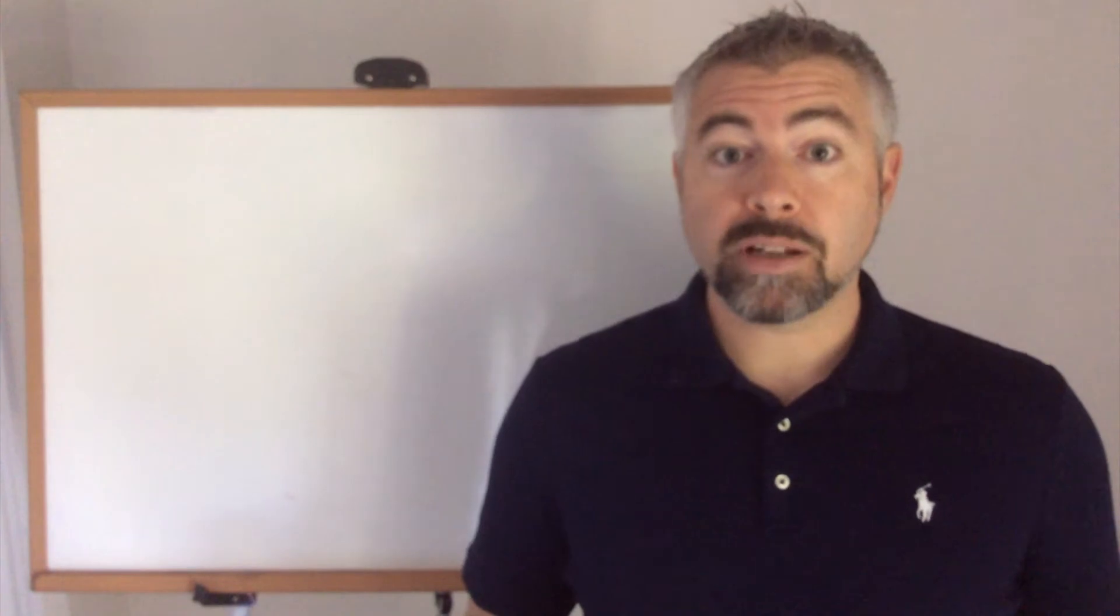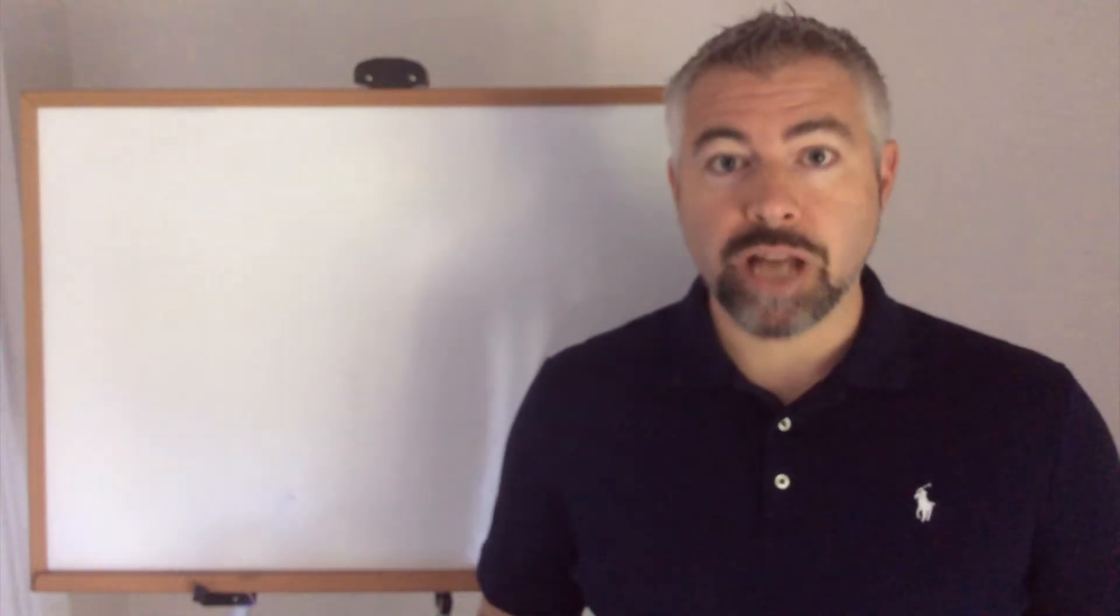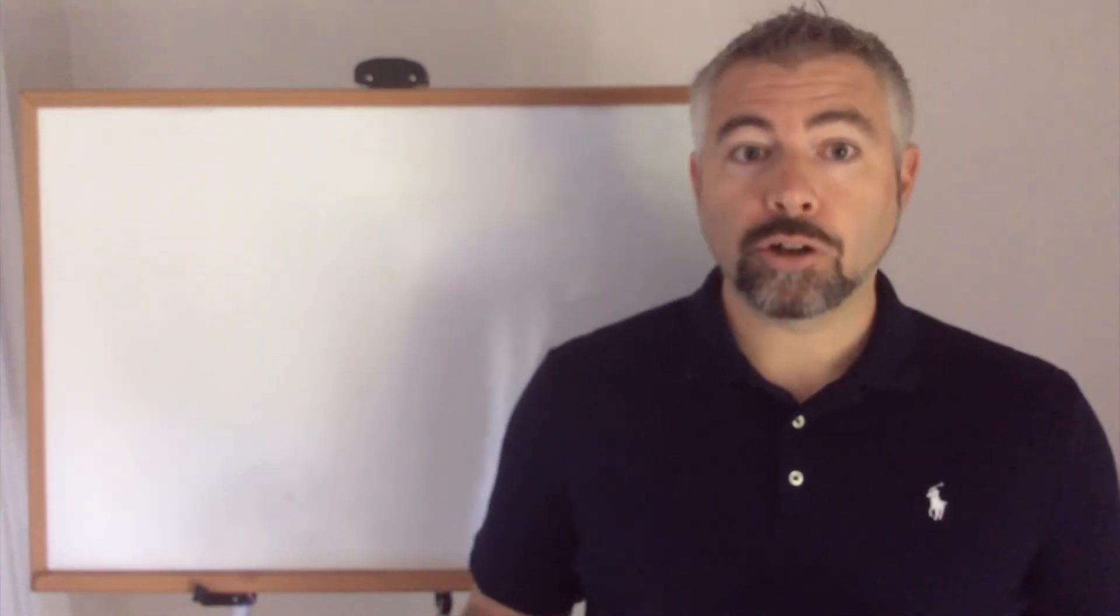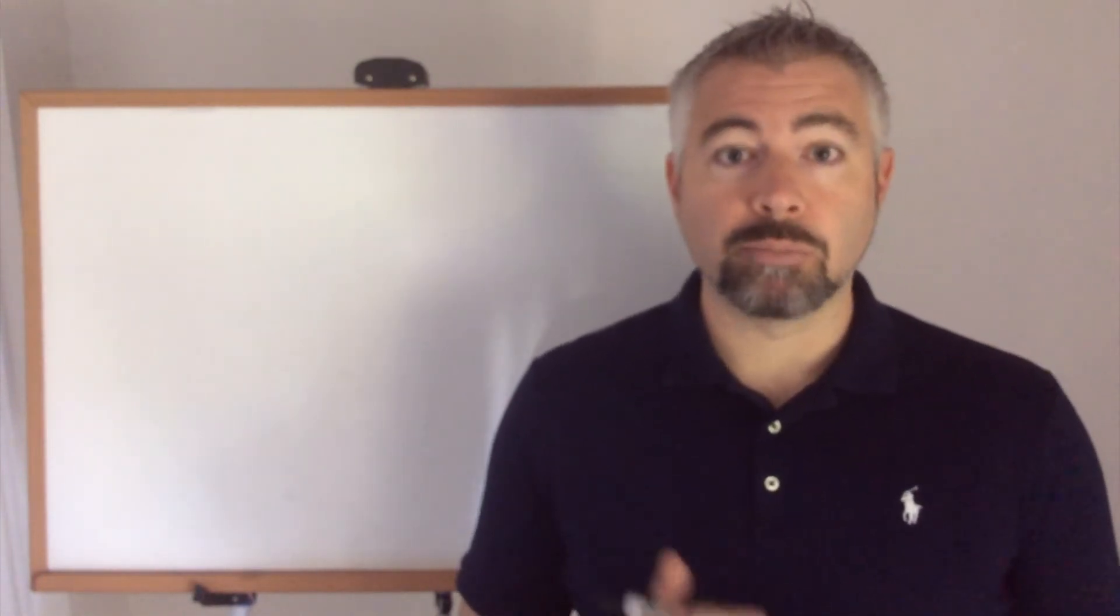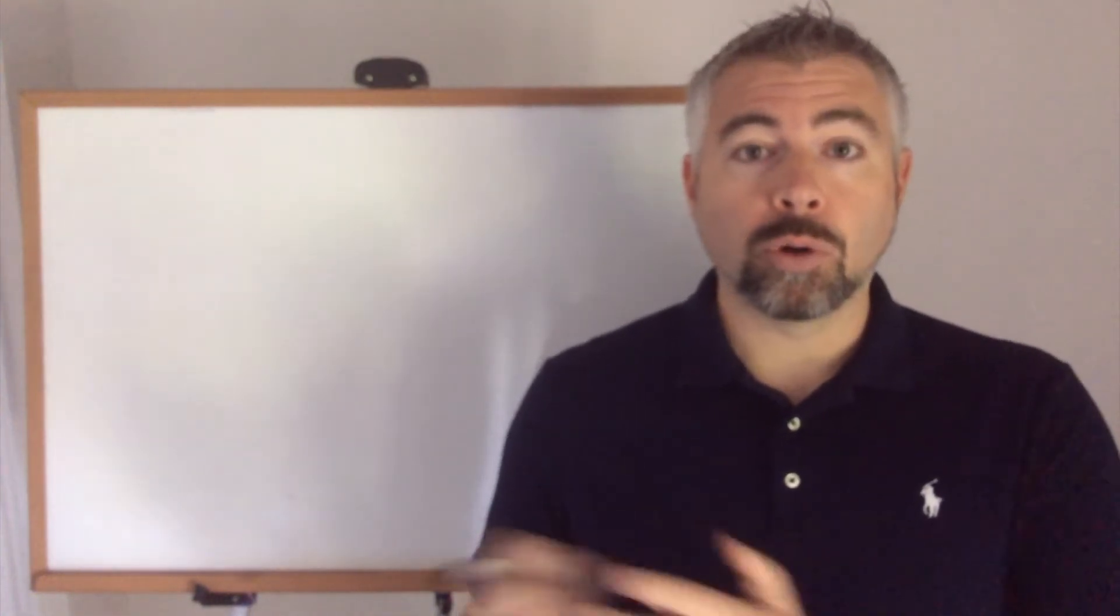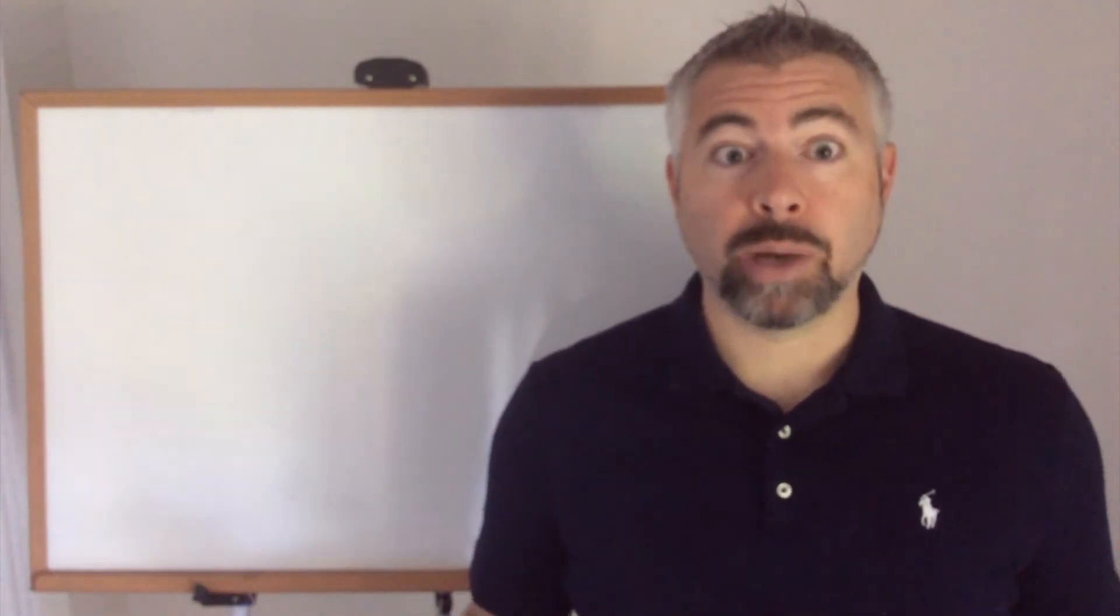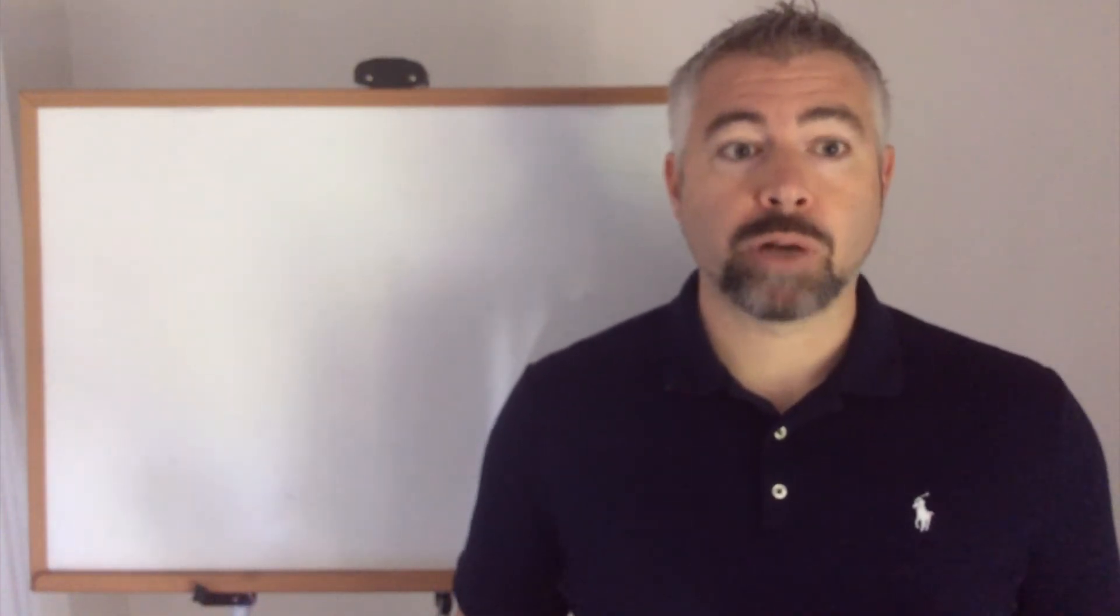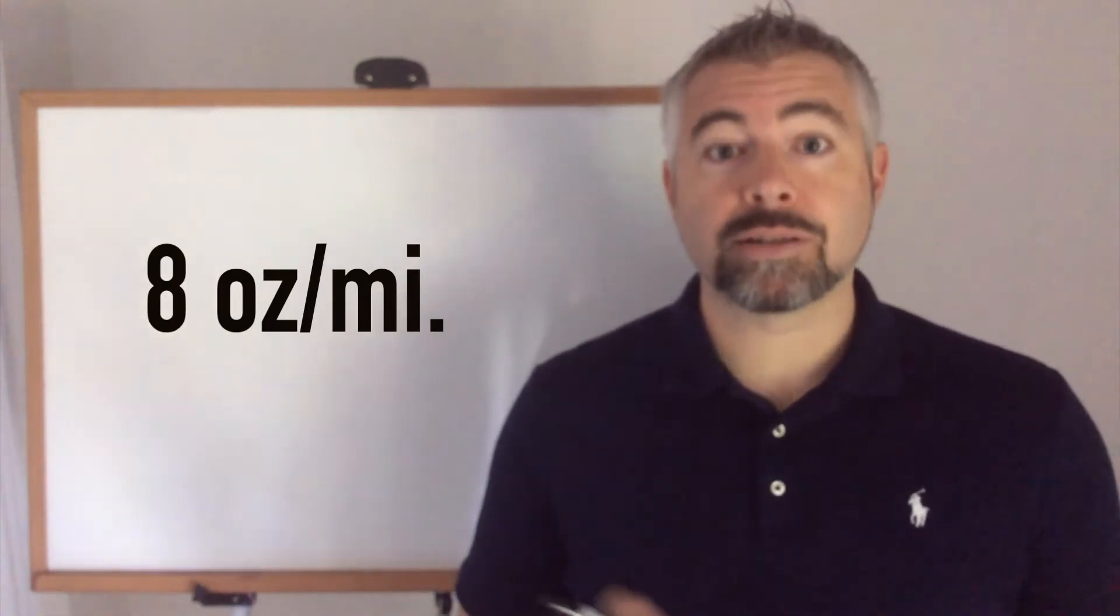The fourth meaning of multiplication is rate. This is probably the most challenging meaning of multiplication, but in some ways the most interesting. A rate is a ratio of things with different units. Usually a rate will be miles per hour or dollars per hour. It's usually with respect to time, but not always. For example, I could say I eat eight ounces of trail mix for every mile that I hike. Then we're comparing the trail mix to the miles.